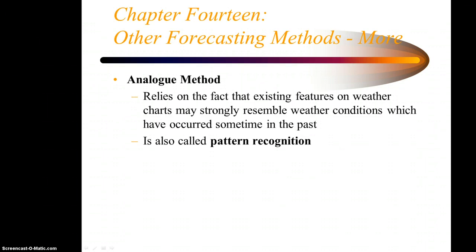Then there's something called the analog method, and this tends to rely on the fact that existing features on weather charts may strongly resemble weather conditions which have occurred sometime in the past. This is also called pattern recognition, and this can be very, very useful, especially if you have a significant event like a major heat wave or maybe a big storm, and somebody at the National Weather Service has worked in that office long enough to remember a big storm back in January of '82, and this pattern that's evolving kind of looks like that. So there's the analog method.